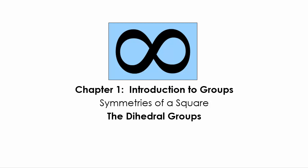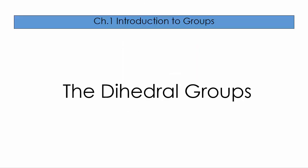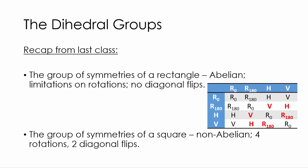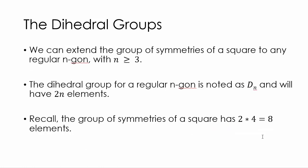Hello and welcome to our second video from chapter 1, this one on dihedral groups. Just a quick reminder, before we looked at the symmetries of a rectangle, which was an abelian group. It had limitations on rotations and no diagonal flips. In the table we could see the abelianness of it, the symmetry of it because everything across the diagonal was symmetrical, so that told us it was commutative. For the group of symmetries of a square, it was non-abelian. We didn't have this same pattern and it had four rotations and two diagonal flips.